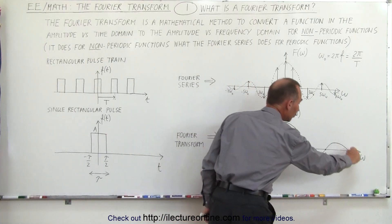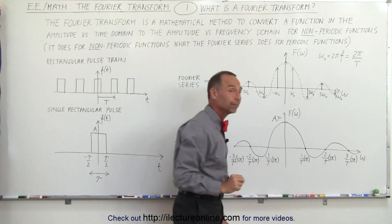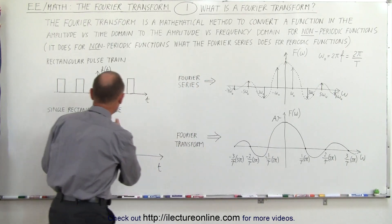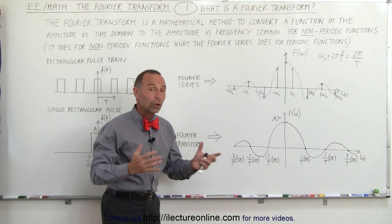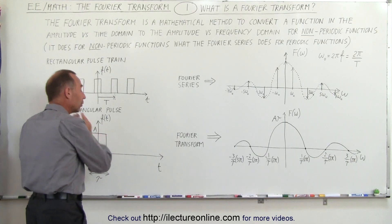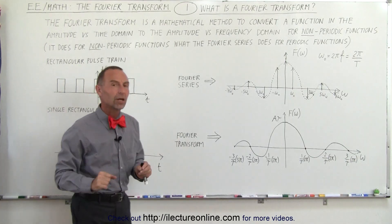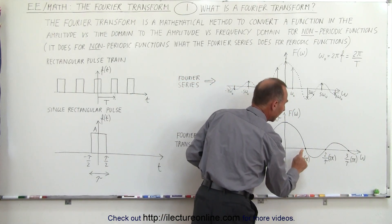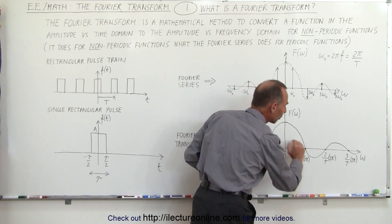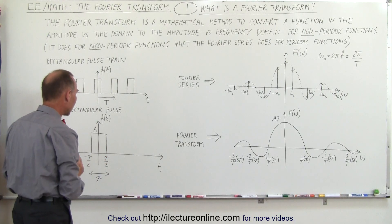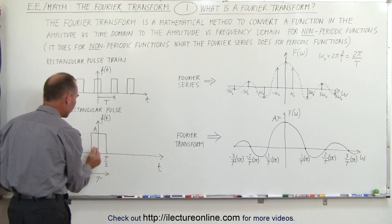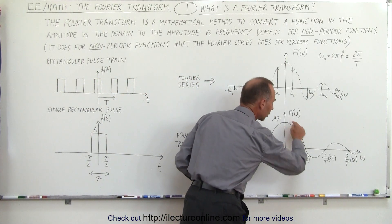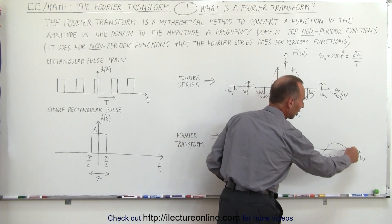We do see places where the function goes through the horizontal axis, and we can find what those values are. The place where it crosses the horizontal axis is at one over tau times two pi — that is the frequency at which it does that. Tau is the pulse width. The pulse goes from minus tau over two to tau over two, so the total pulse width is tau. Taking one over tau times two pi gives the first crossing, two over tau times two pi gives the next crossing, three over tau the next, and so forth.